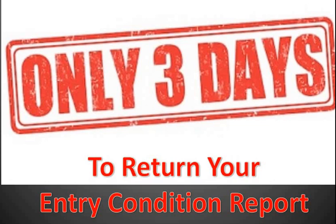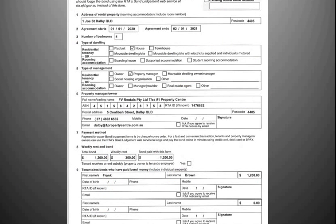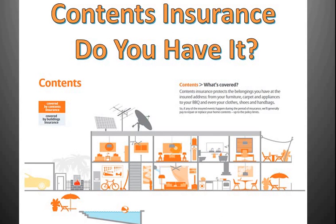When you pay your rental bond to our agency, we will provide you with a trust account receipt. We will then lodge your bond with the RTA — the Residential Tenancies Authority — within 10 days. In the coming weeks, you will receive a receipt from the RTA as evidence that your bond is now lodged with the authority and is held in trust. Please note that your contents are not covered by any landlord insurance policies — if you want protection for your belongings, please make sure you take out your own contents insurance.